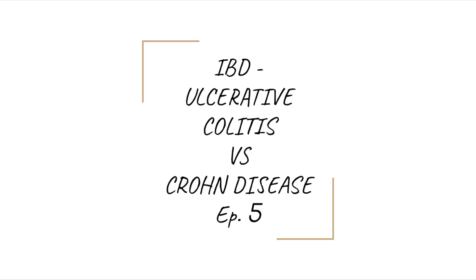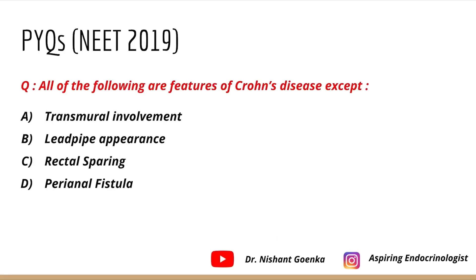Welcome to episode 5 of the Medicine PYQ Topic Series. Today's topic is inflammatory bowel disease — a comparison between ulcerative colitis and Crohn's disease. The PYQ question from NEET 2019 was: 'All of the following are features of Crohn's disease EXCEPT: transmural involvement, lead pipe appearance, rectal sparing, and perianal fistula.' The answer is lead pipe appearance, which is a feature of ulcerative colitis.